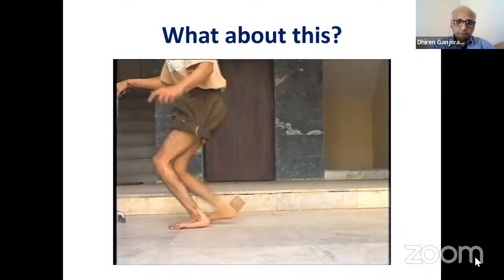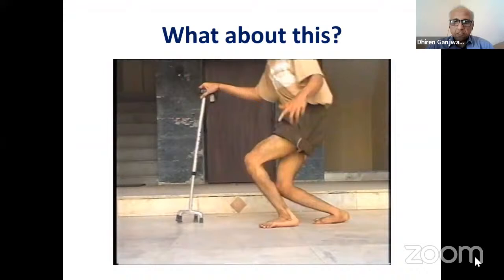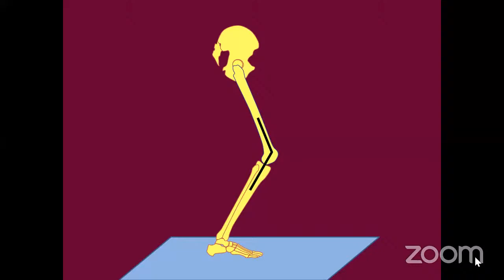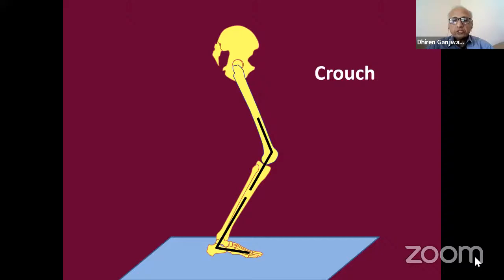Now this is crouch - no controversy, no confusion. The knee is in flexion and the ankle is in dorsiflexion, and that's why we call it crouch gait. So in the definition of crouch gait, it's very important that both knee flexion and ankle in dorsiflexion are prerequisites.